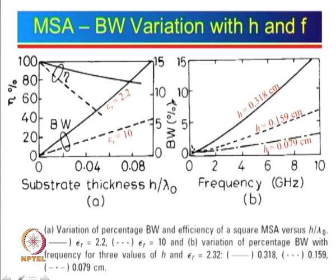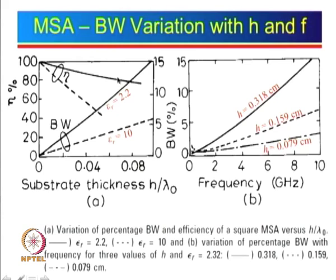In the last lecture we had seen this particular curve, just for a quick brush up. Here is a curve which shows percentage bandwidth and efficiency on the vertical axis versus substrate thickness h by lambda_0. We can see that the percentage bandwidth can be as high as 15 percent for epsilon_r of 2.2, but corresponding efficiency is going to be poor. Even if you want 10 percent bandwidth, it can be achieved but efficiency is slightly lower. If you want more than 20 or 30 percent, we can see that it is not easy to achieve using a single microstrip antenna.